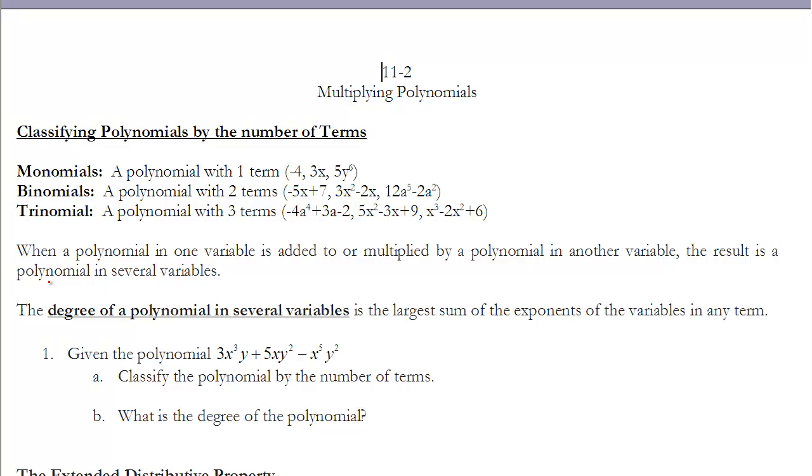If I'm looking at the degree of a polynomial in terms of several variables, the thing I'm looking for is the largest sum of the exponents. So as I look at the variables on each term, I'm going to add the powers of the exponents together to get the degree of that term, and then whatever the largest degree of any one term is represents the degree of that polynomial.